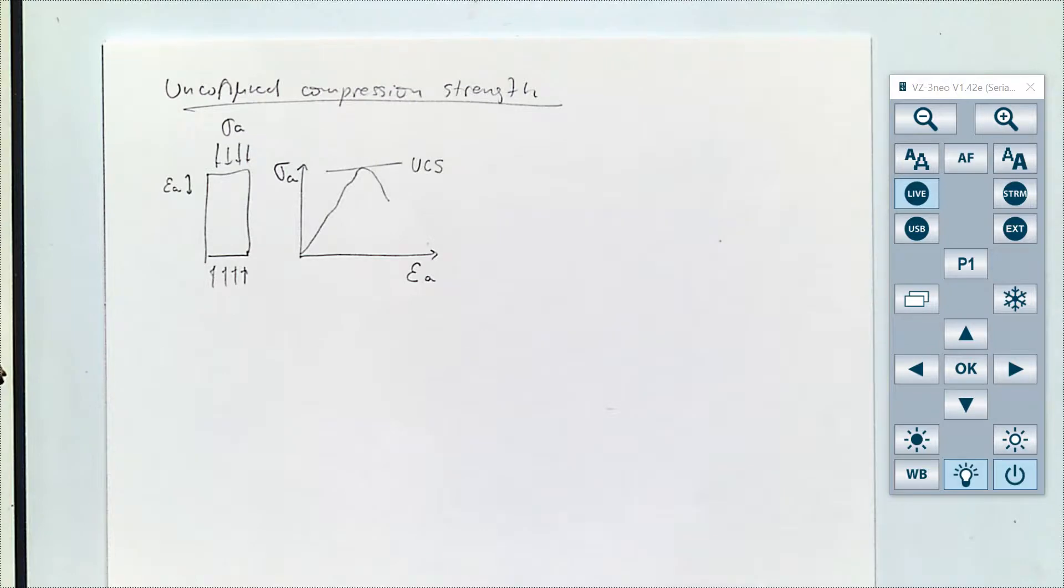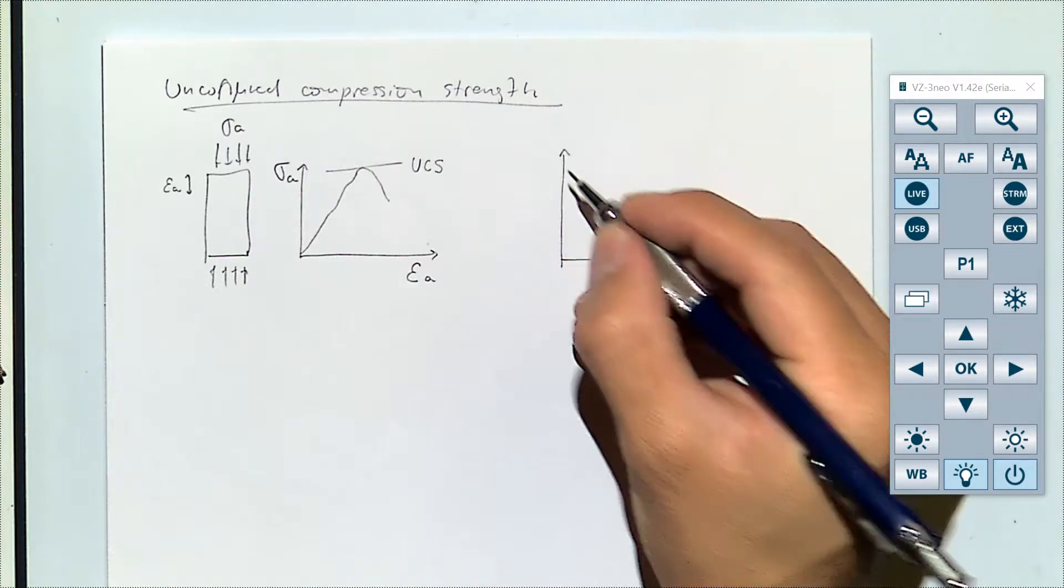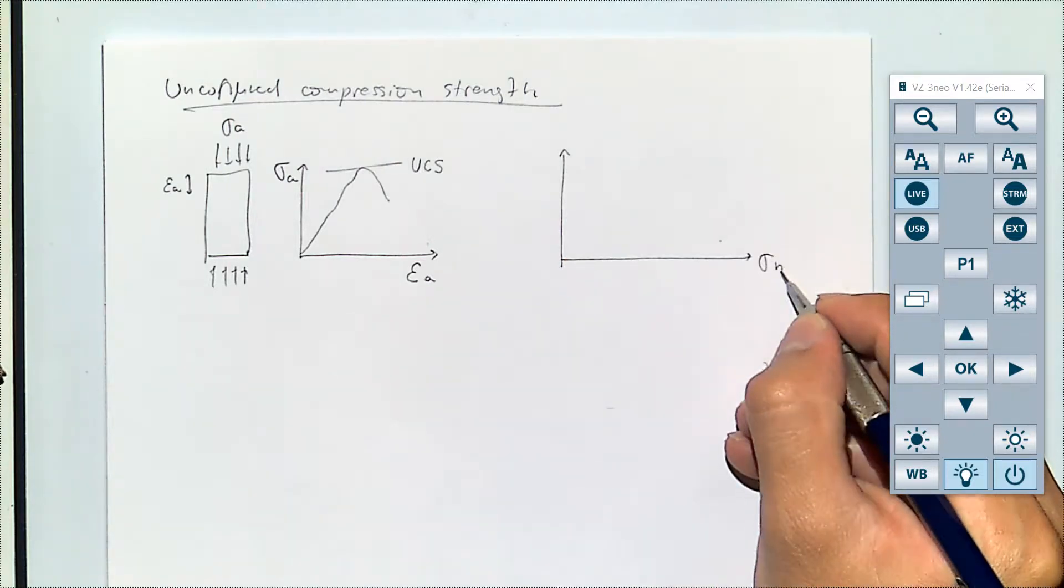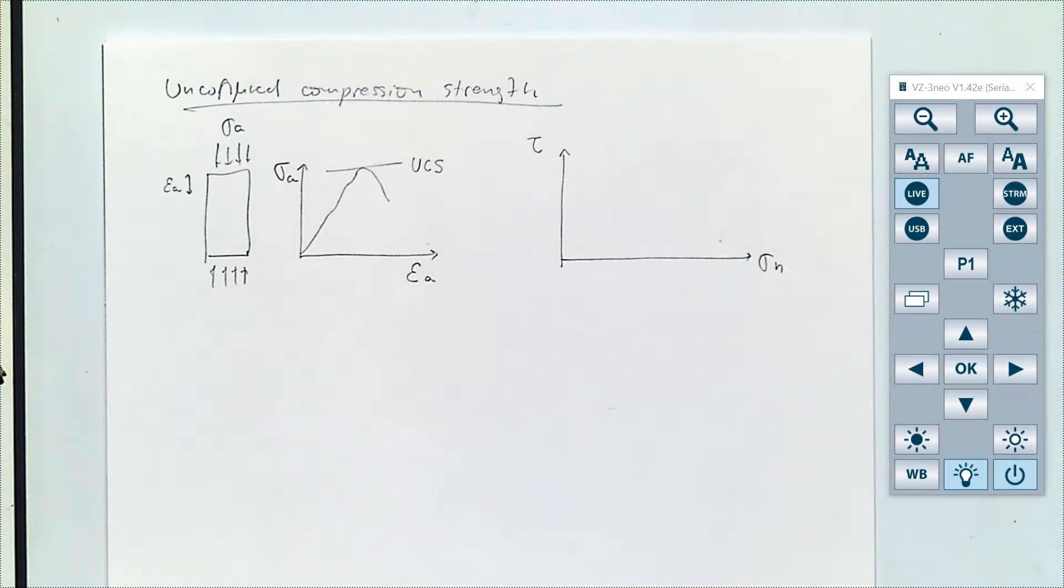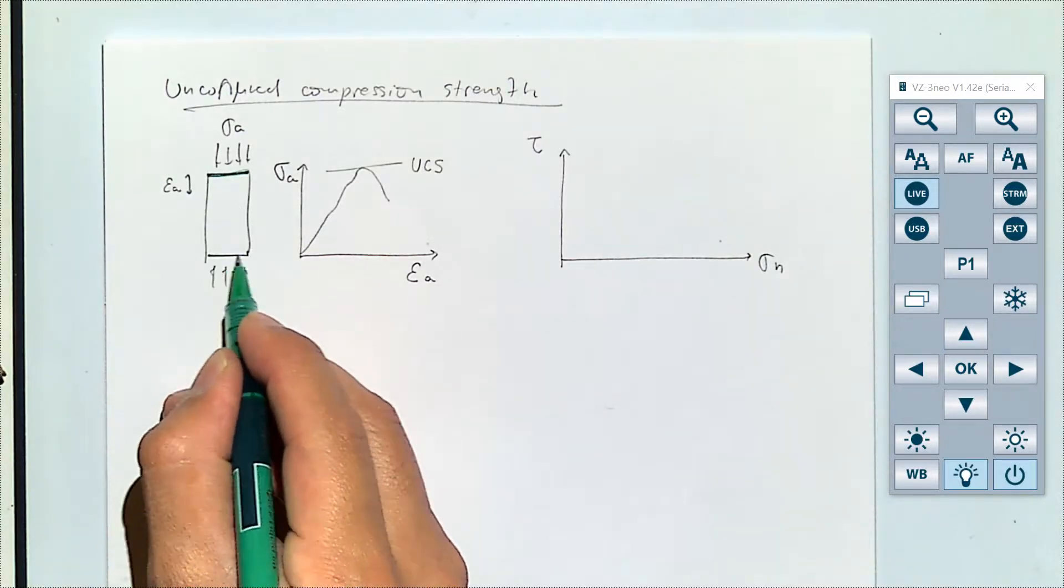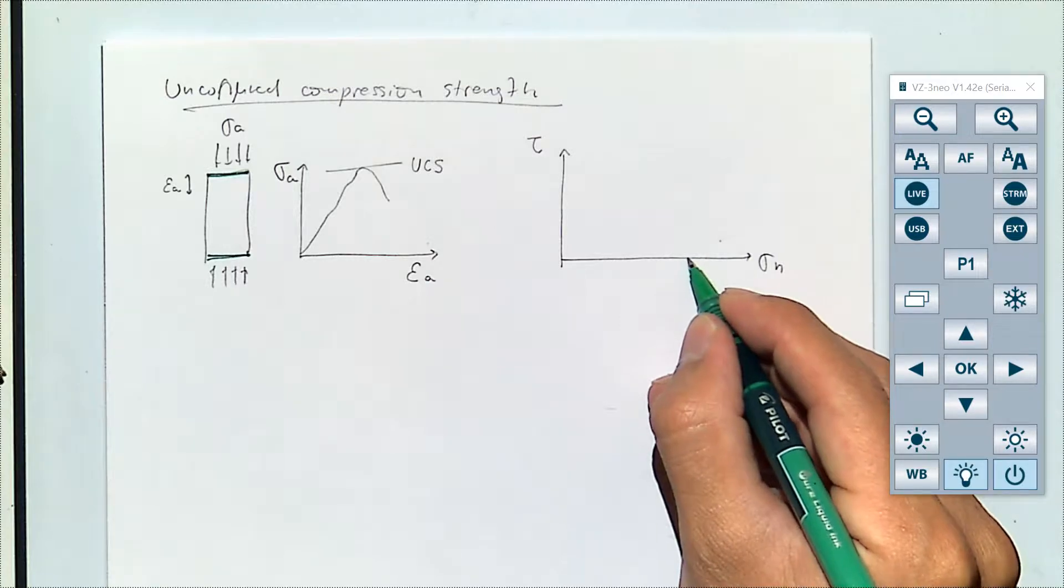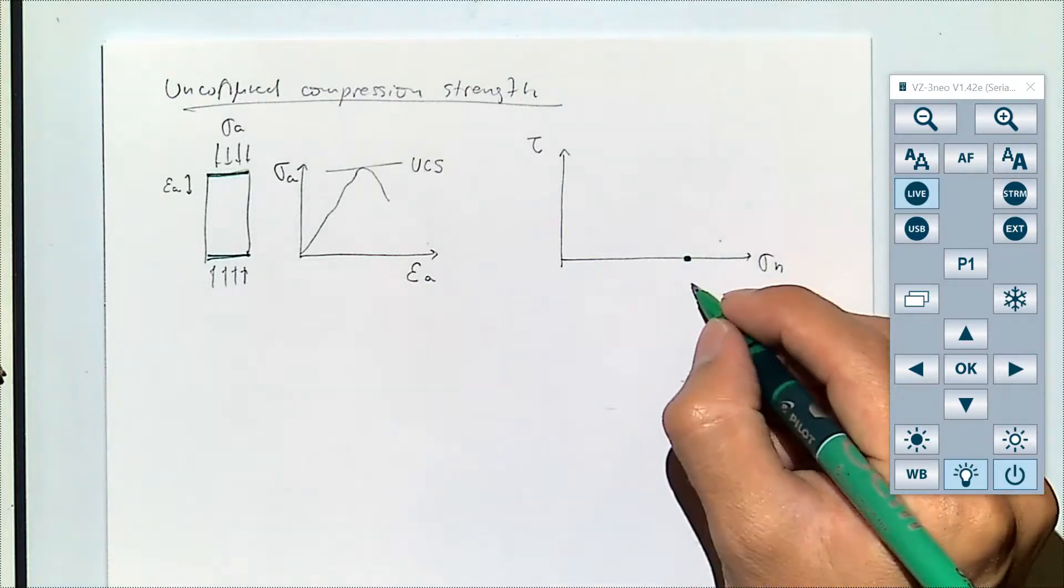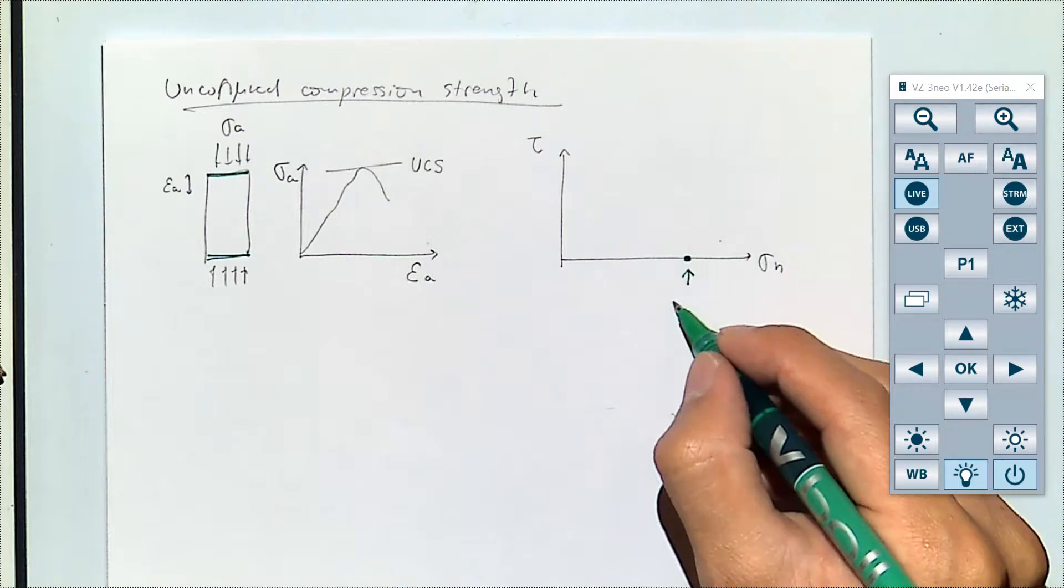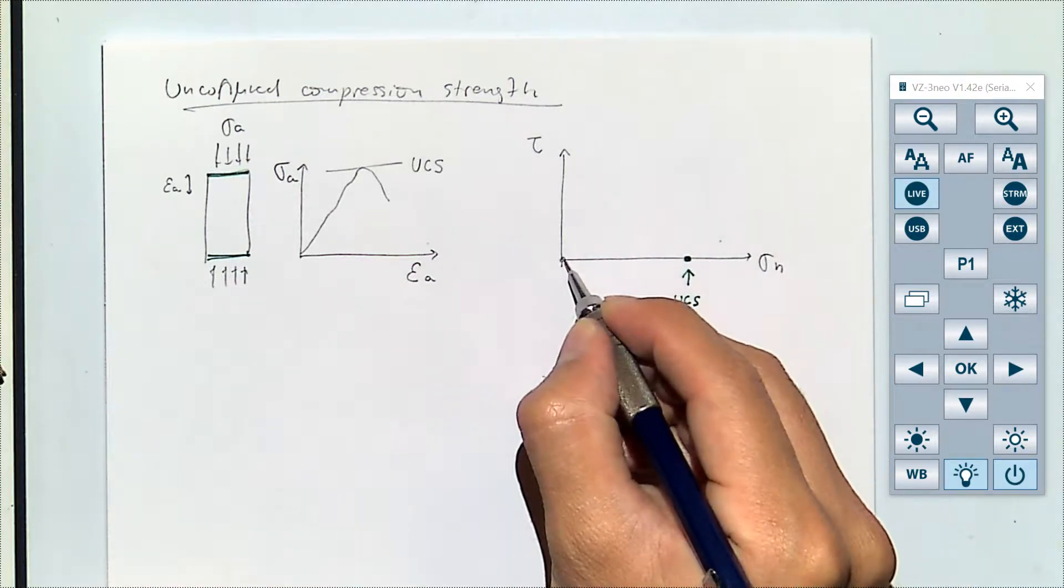We haven't done this so far but we'll do it now. For this case you can also make a Mohr circle. A Mohr circle, remember, is going to be always a representation of the state of stress where in the x-axis you put the principal stresses and in this case the axial stress at failure is going to be a value somewhere over here and the maximum value that it can take is going to be the value of UCS and the confinement in this case because it's unconfined is going to be equal to zero.